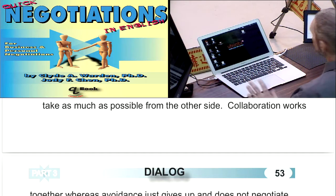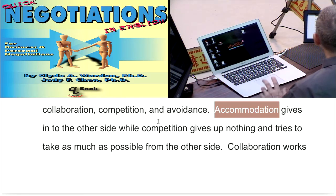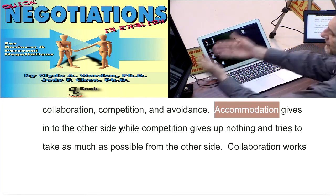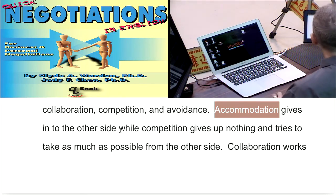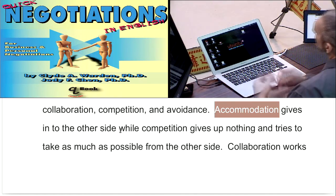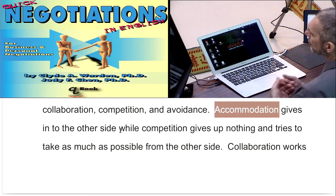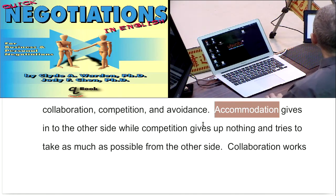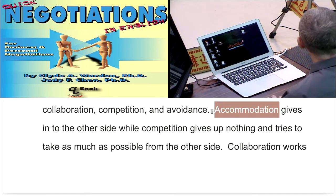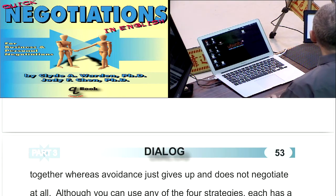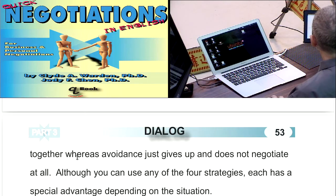Let's look at each one. Accommodation means you just give in — whatever the other side wants, you give it to them. Why would you use accommodation? Maybe there's a special situation where giving in now means you'll get something later in a different negotiation. Or maybe your position is so weak that you won't gain much. Or this negotiation simply isn't very important, so you go ahead and give in anyway.